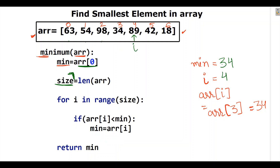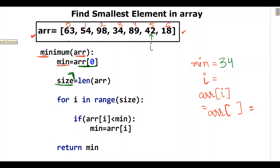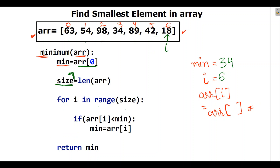For index 4, ARR[4] is 89. We compare: is 89 smaller than 34? No — so it won't enter the if condition. For index 5, ARR[5] is 42 and min is 34. Is 42 smaller than 34? No — so the loop continues to index 6, where the value is 18, and min is 34.